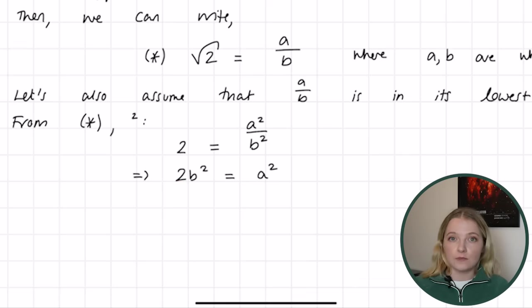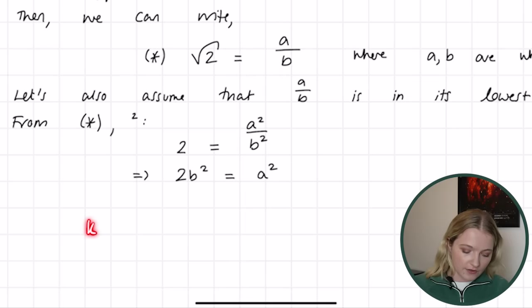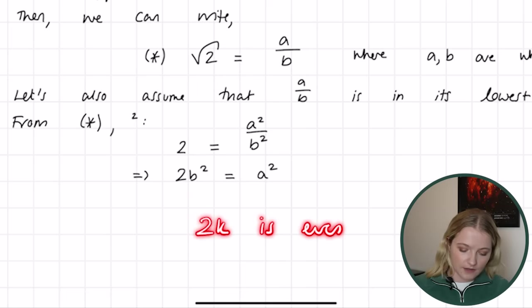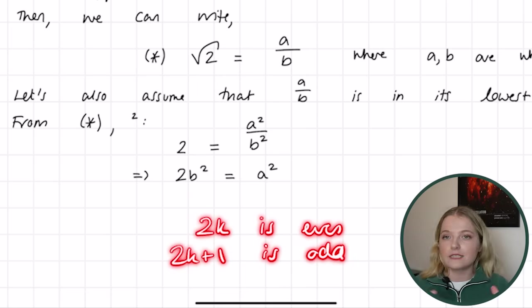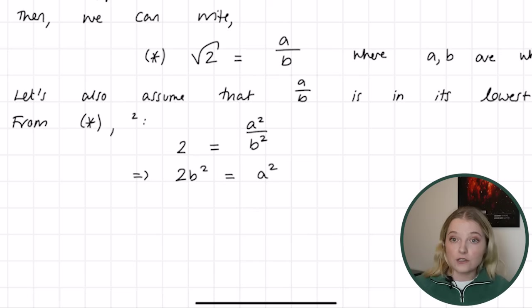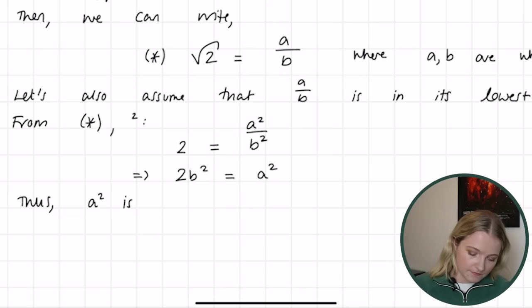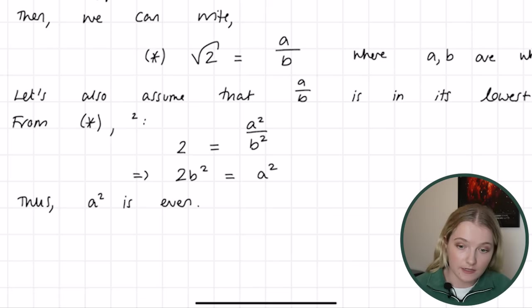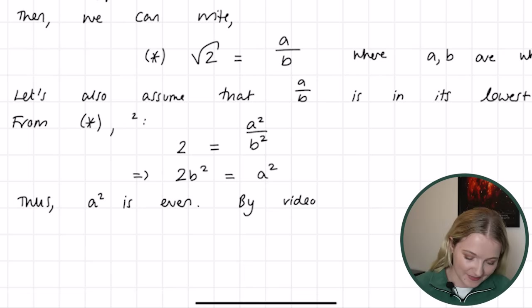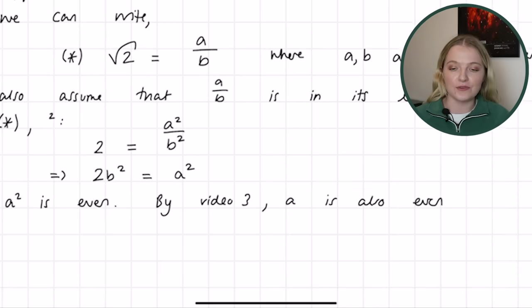In mathematics, if a squared equals 2b squared — that is, a squared has a factor of 2 — this by definition means it's even. As I covered in video one, for any integer k, 2k is even and 2k plus 1 is odd — that's standard. So from this, we can say: therefore, a squared is even. And by the result in video three, a is also even.